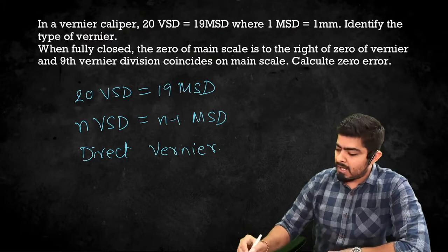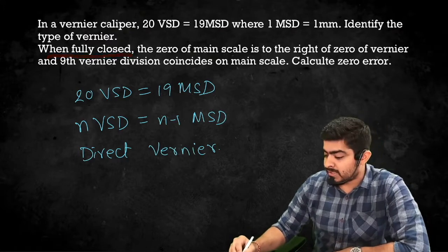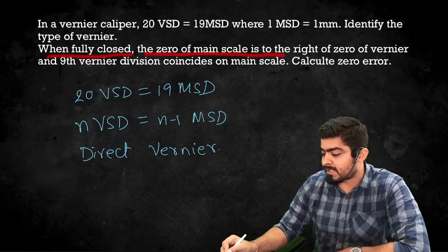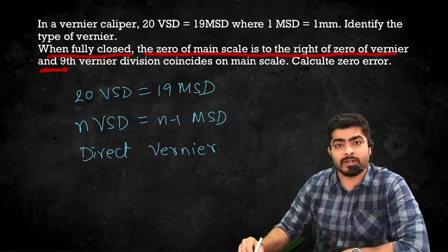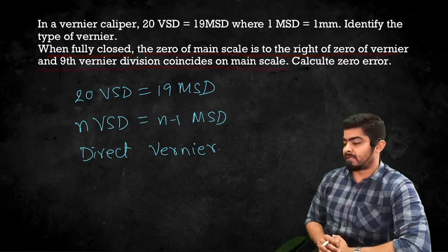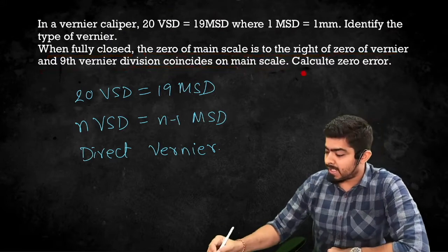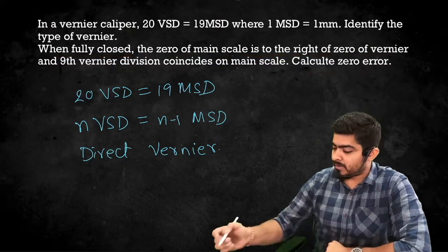Now the question asks: when fully closed, the 0 of Main Scale is to the right of 0 of Vernier, and the 9th Vernier Division coincides on the Main Scale. Calculate the zero error.